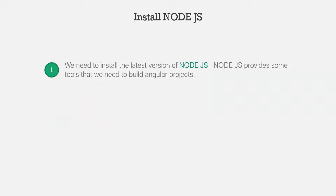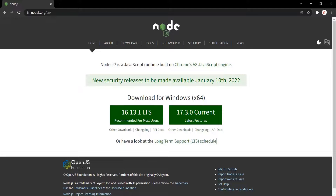The first thing you need to do is install the latest version of Node.js. Node.js is a runtime environment for executing JavaScript code outside of the browser. In this course, we are not going to work with Node.js directly, but Node.js provides tools that we need to build Angular projects. If you have not already installed Node.js, head over to nodejs.org and install the latest version for your operating system. The operating system will be picked automatically — I am using Windows, so Windows is already selected.